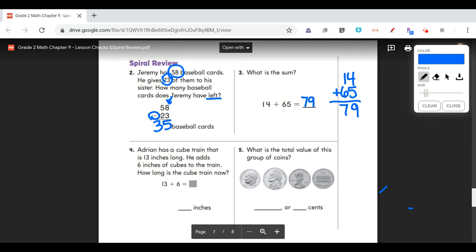The next one. Adrian has a cube train that is 13 inches long. He adds 6 inches of cubes to the train. How long is the cube train now? So we had 13. And then he added 6. So we have to do 13 plus 6. I'm going to rewrite this so that it's vertical and my place values are lined up. So 3 plus 6 is 9. And then 1 plus nothing, or we can pretend that there's a 0 here. So 1 plus 0 is still 1. So his train is now 19 inches long.